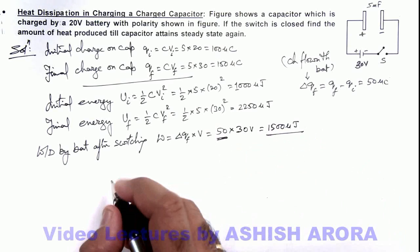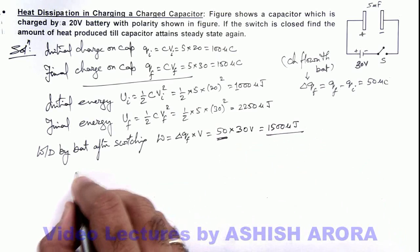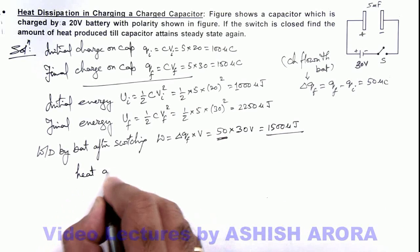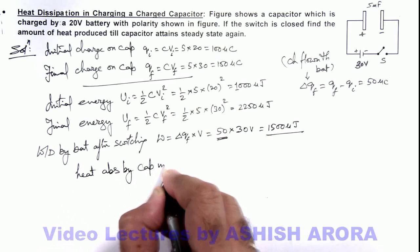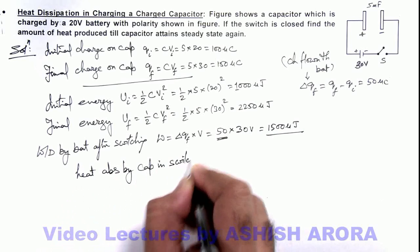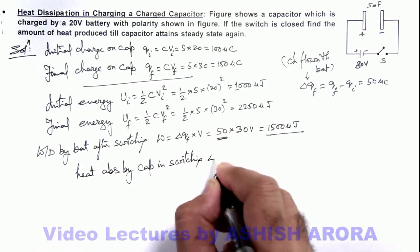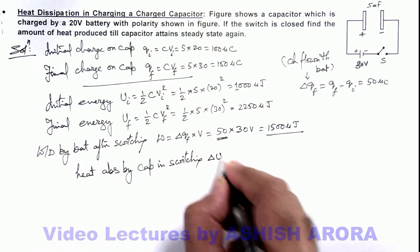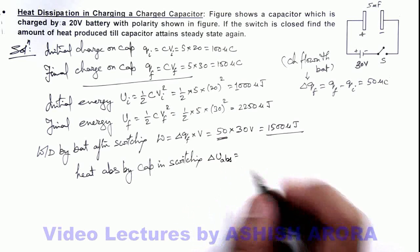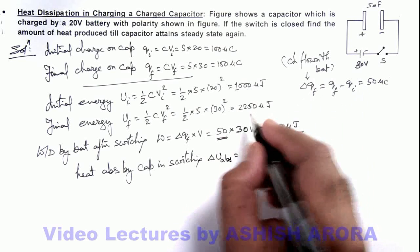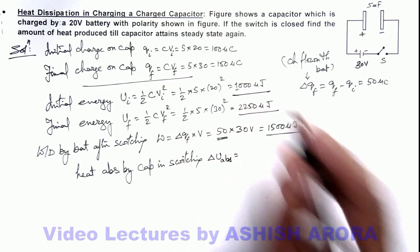Now in this situation if we calculate the heat absorbed by capacitor in switching, this ΔU_absorbed can be given as the final energy minus initial energy. Final energy is 2250 microjoule and initial energy